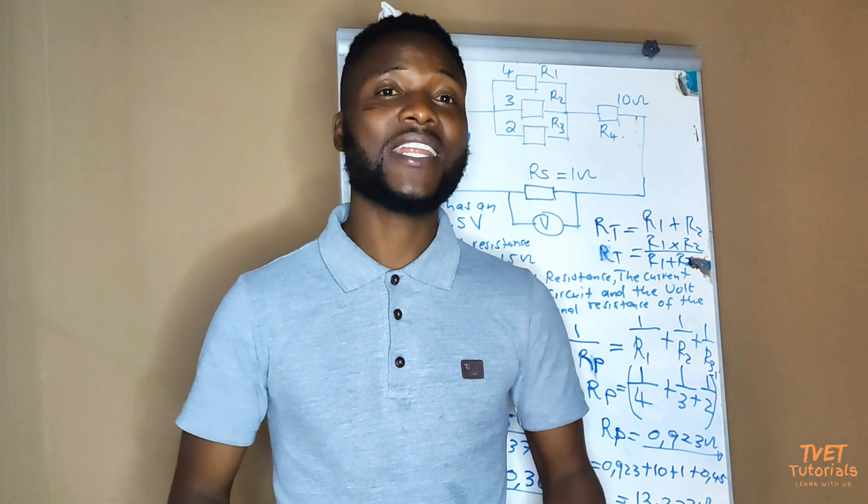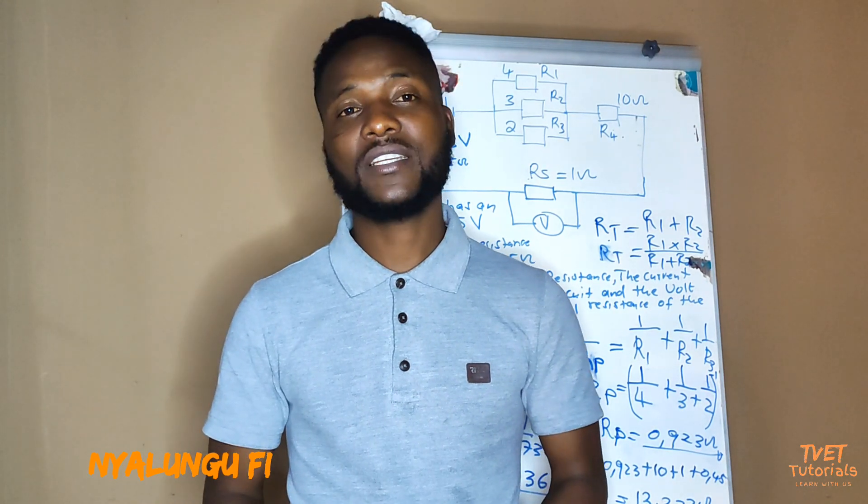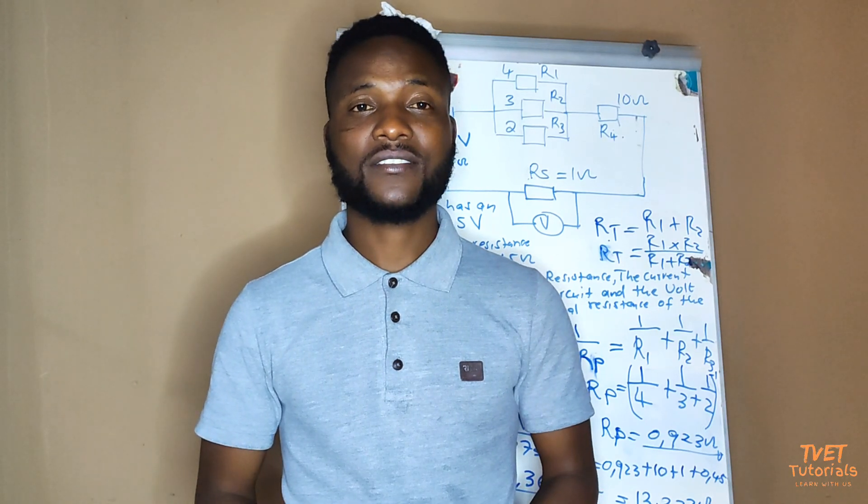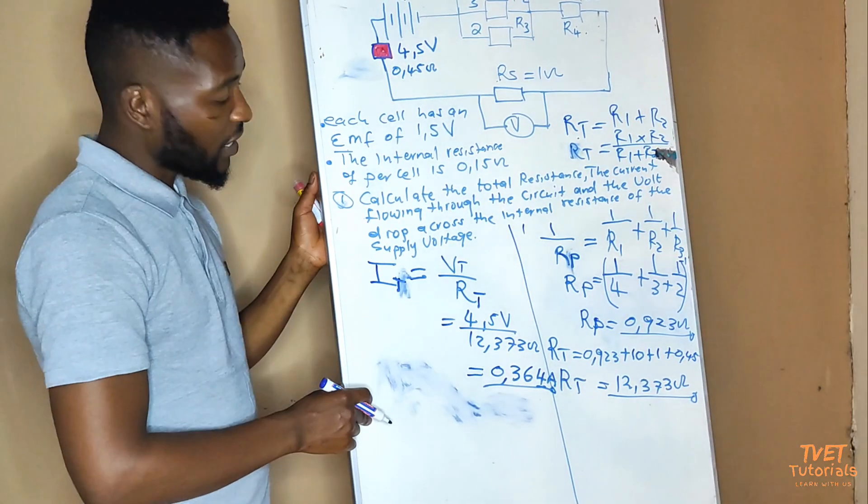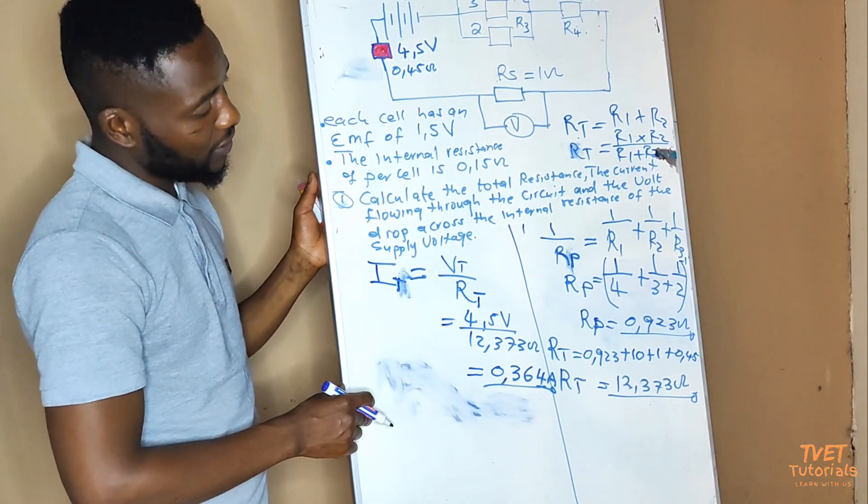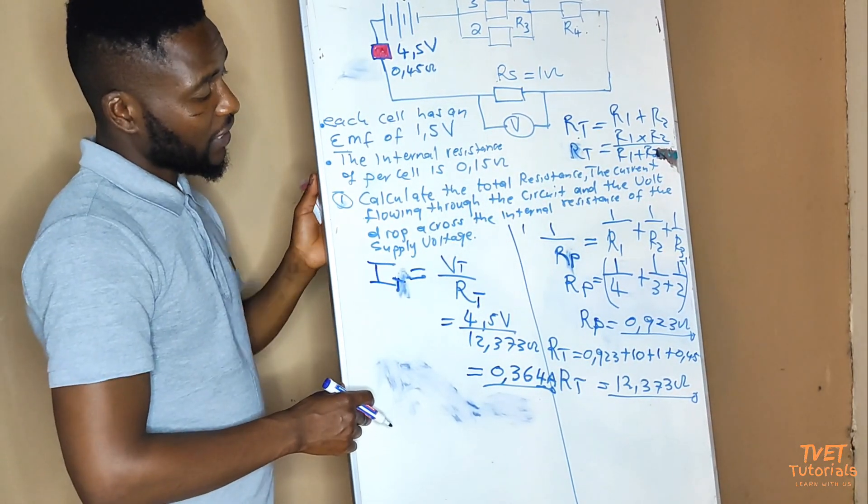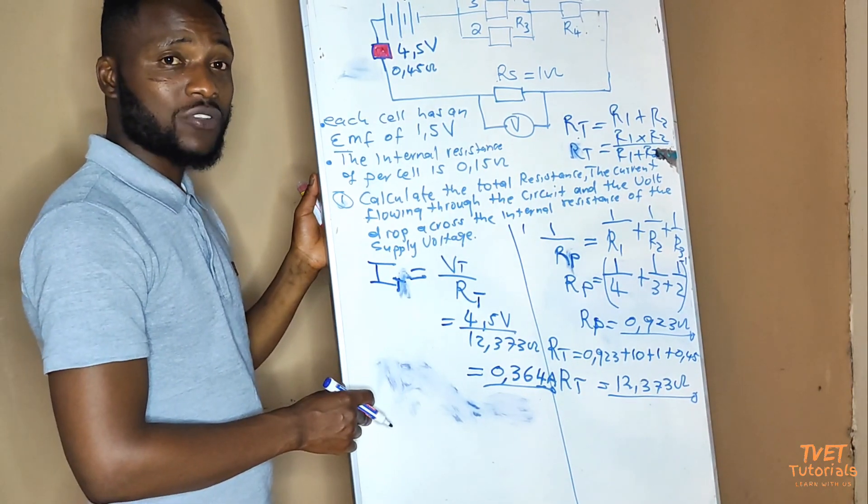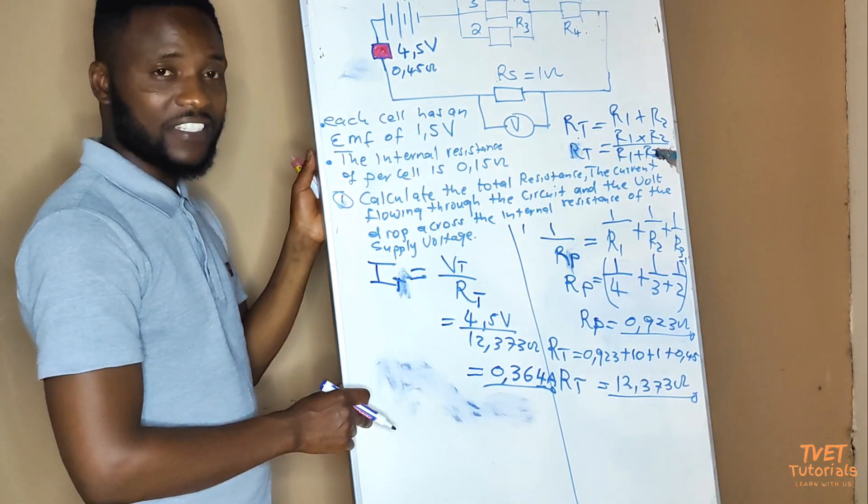Welcome back to our lesson on electricity. Today we'll be calculating the voltage drop across the internal resistance. Let's look at the question again. The question says calculate the total of the voltage drop across the internal resistance.